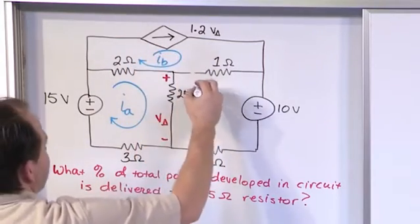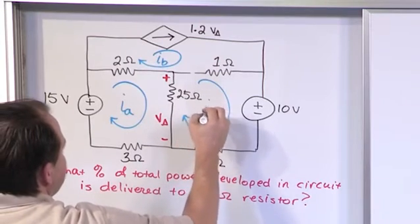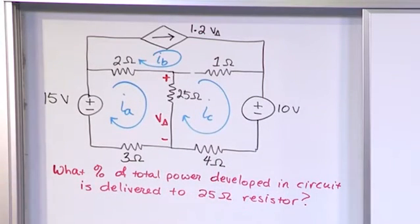it'll be I sub B. And we'll call this mesh sub C, which is I sub C. So no big surprises.